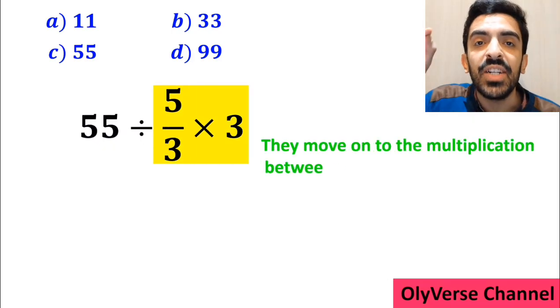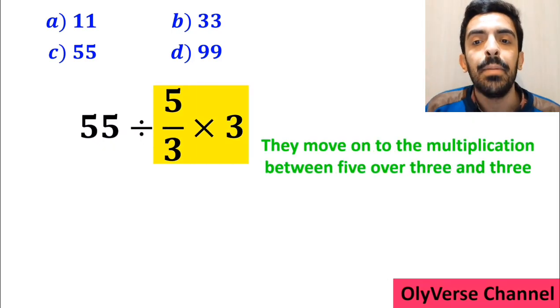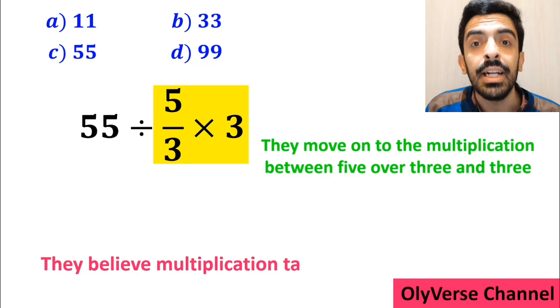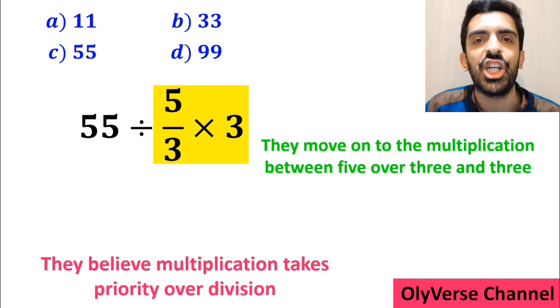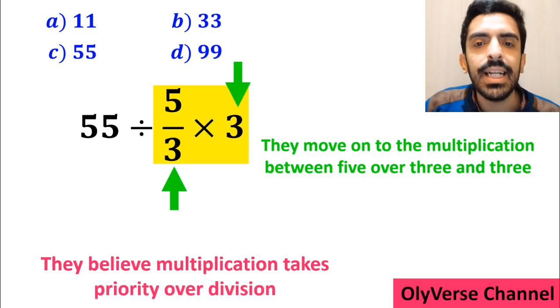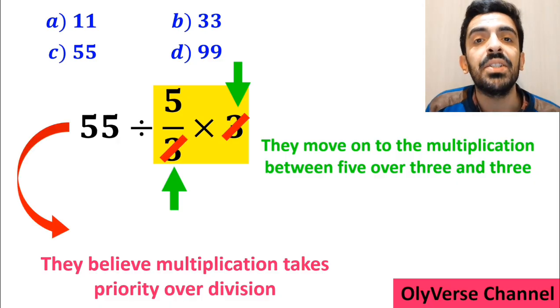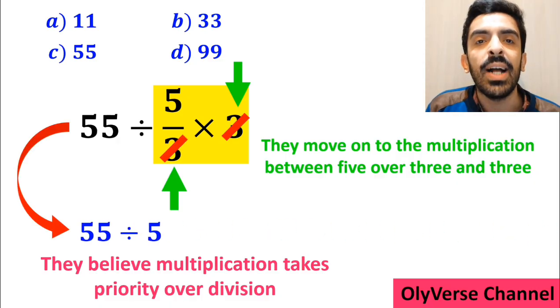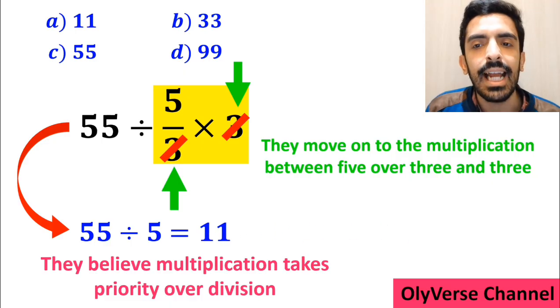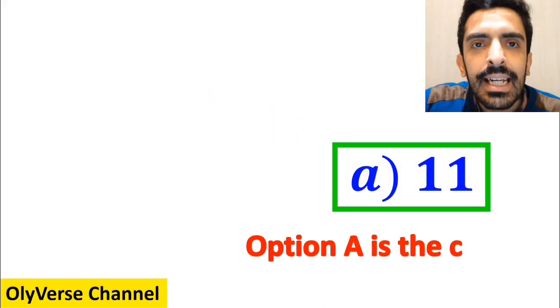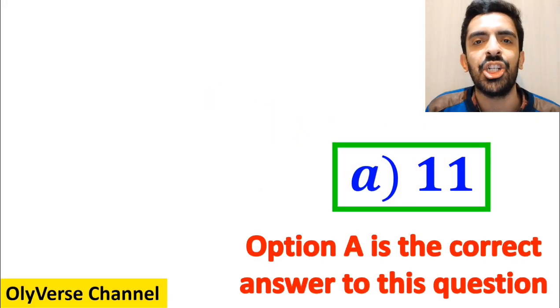They move on to the multiplication between 5 over 3 and 3 because they believe multiplication takes priority over division. As you can see on the screen, they simplify the number 3 with the 3 in the denominator and instead of the original expression, they write 55 divided by 5, which finally gives the answer 11. And immediately, they conclude that option A is the correct answer to this question.